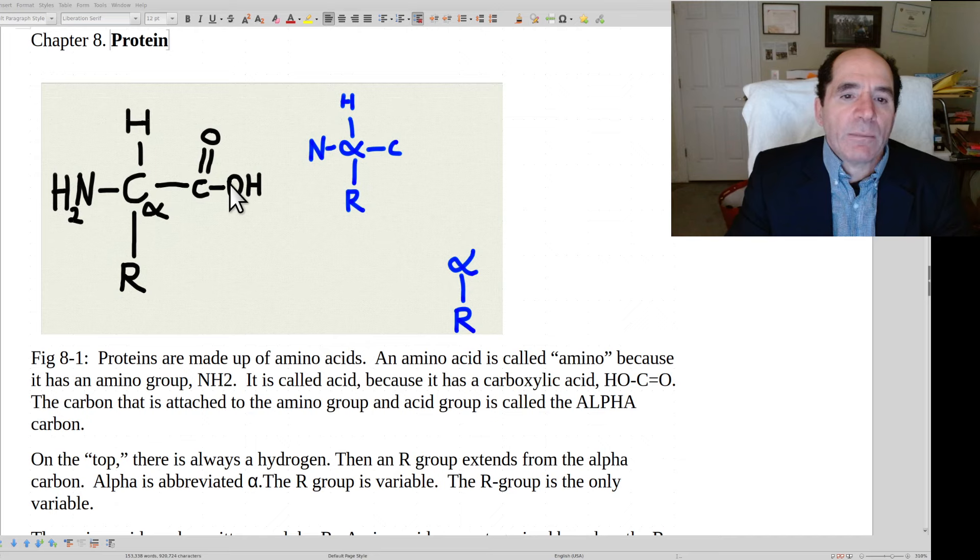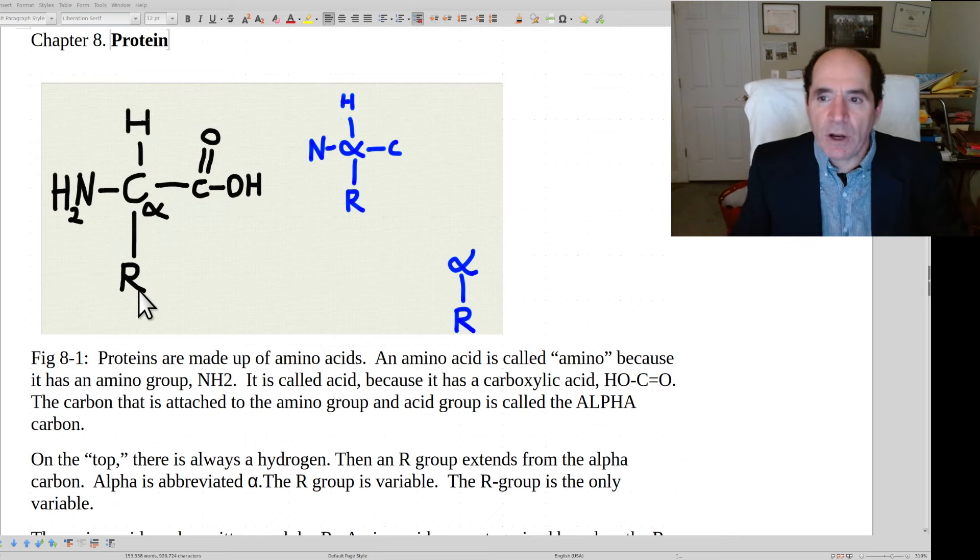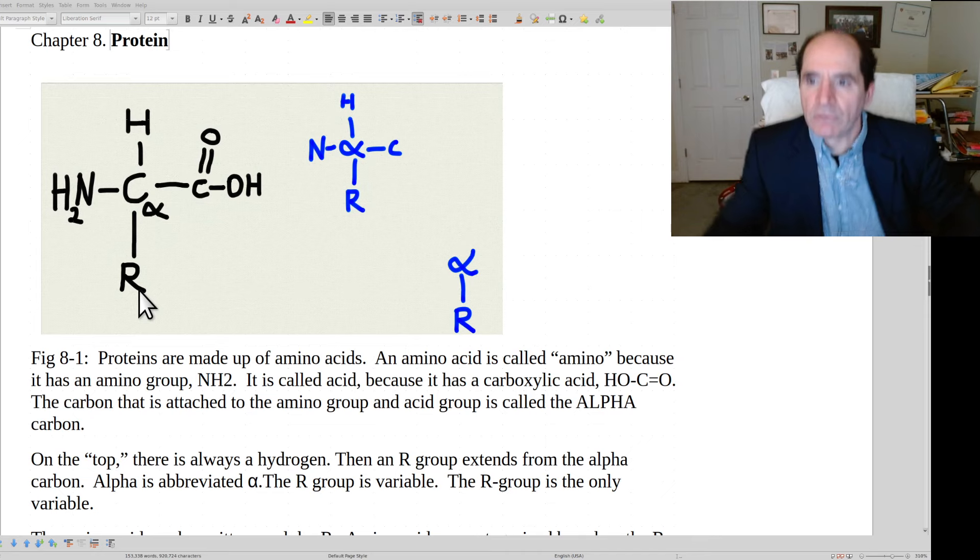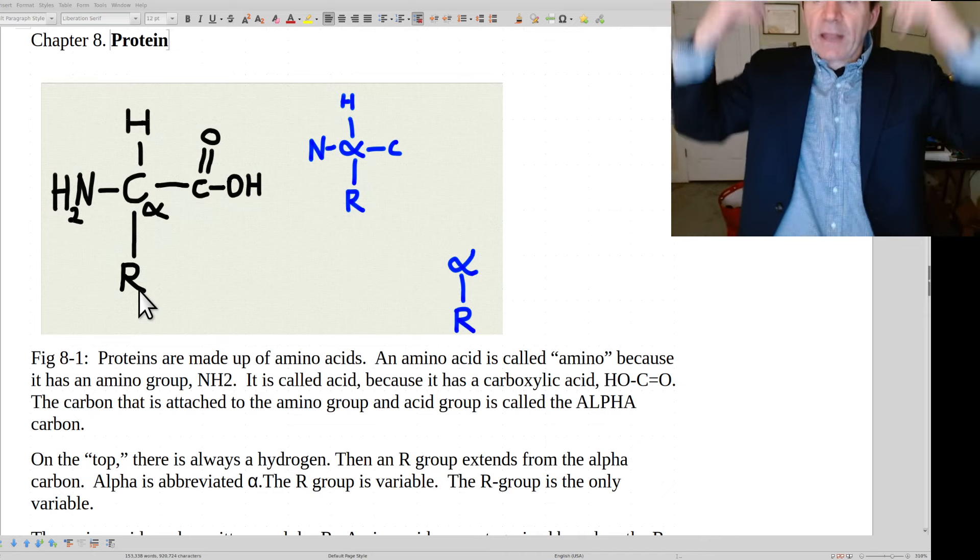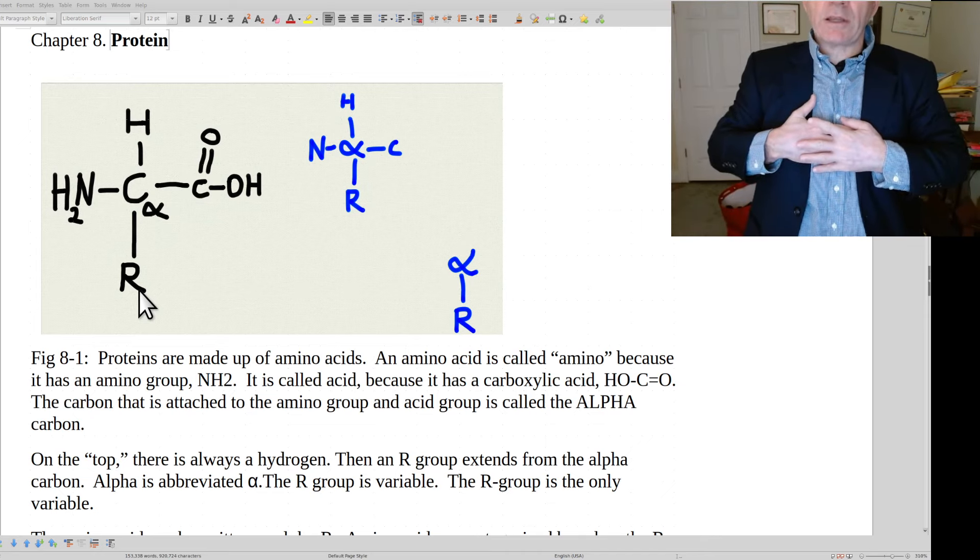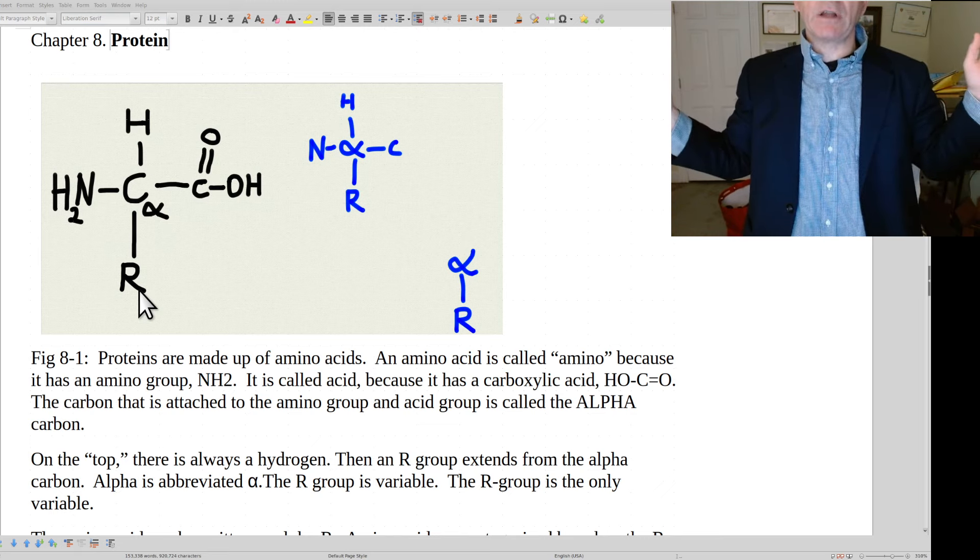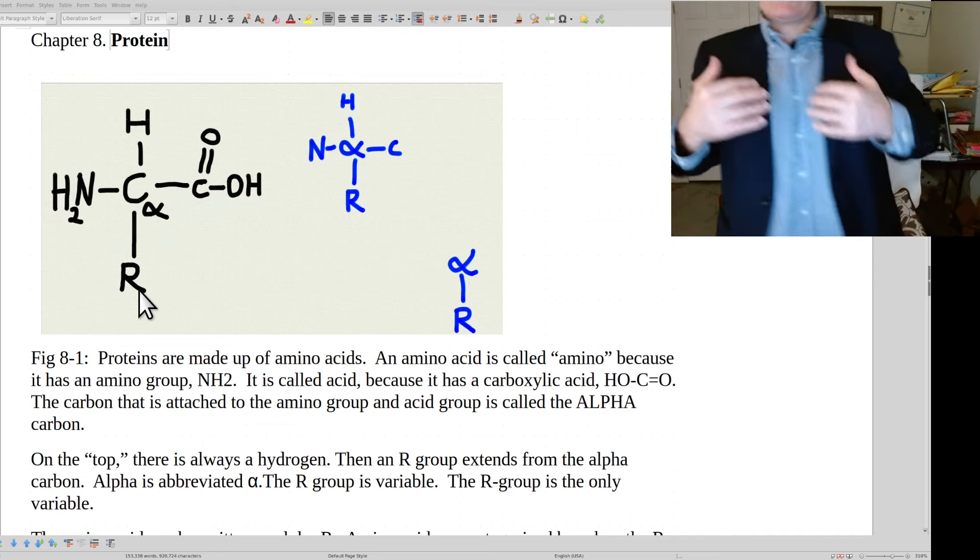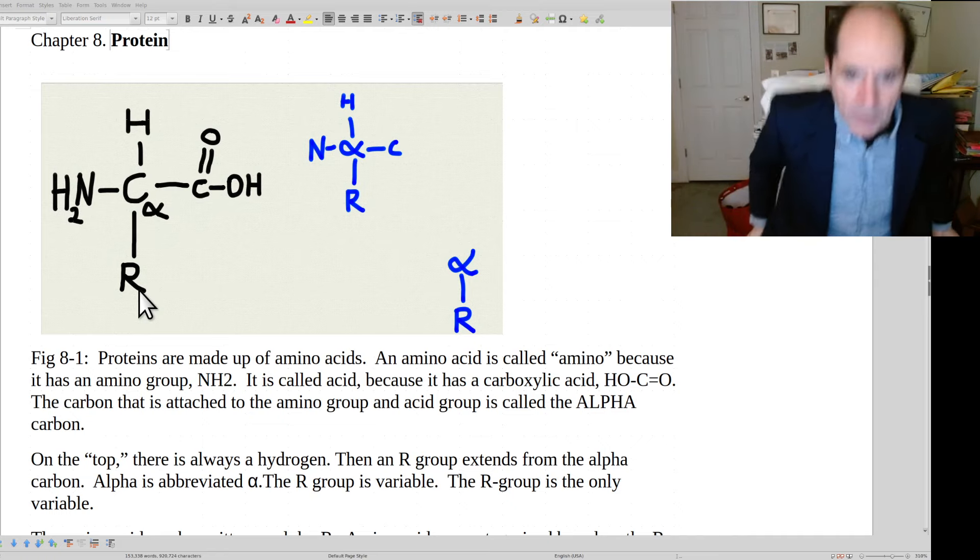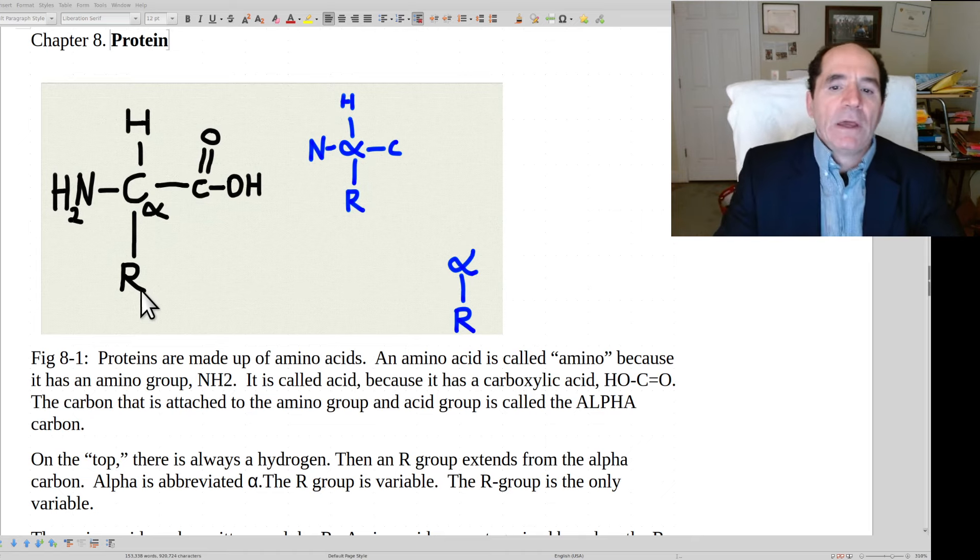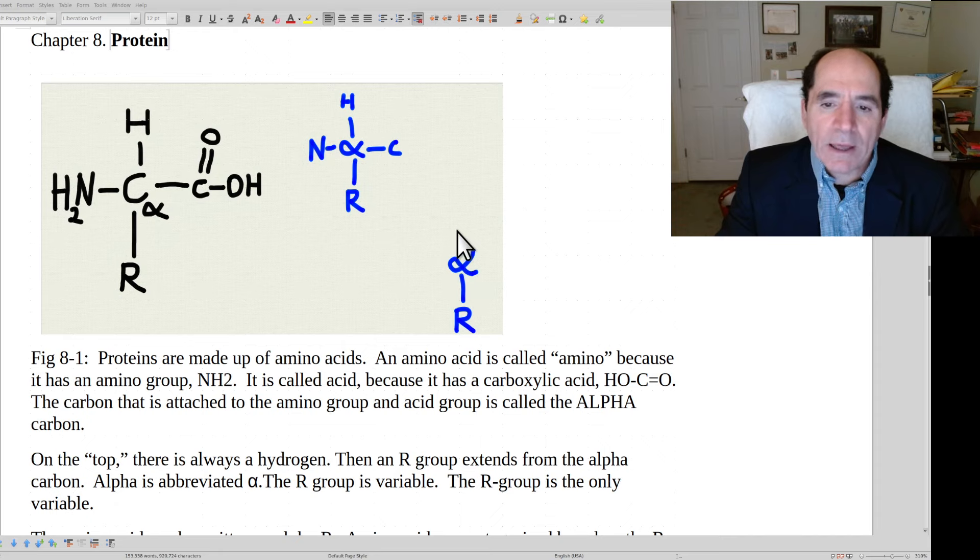And then the variable is the R group. So I describe this as being almost like a Jesus on a crucifix. H for the head. Imagine the heart is in the center. The heart's like the alpha carbon. One hand out to one side is the amino group. Another hand to the other side is the carboxylic acid. And then it's only the legs, if you will, the R group that are variable. And so that's why you can abbreviate an amino acid just alpha R. So alpha is the alpha carbon. There's the R group. You automatically know there's a hydrogen up here, an amino here and a carboxylic acid right there. This is the variable.